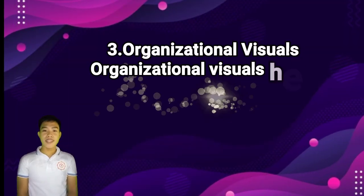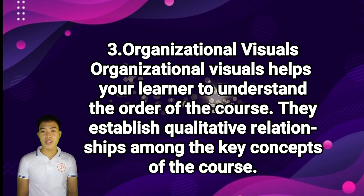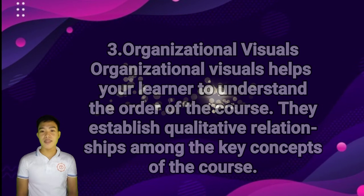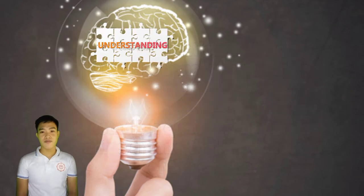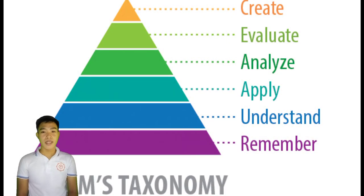We as teachers can create mnemonic visuals in order for our students to easily remember what is being taught. Number three is organizational visuals. Organizational visuals help learners understand the order of the course. They establish qualitative relationships among the key concepts. This type of visual uses charts or drawings to deliver data or make a statement in an organized and perceptible way. Take a look at this example — it's an organizational visual about Benjamin Bloom's Taxonomy of Educational Objectives.